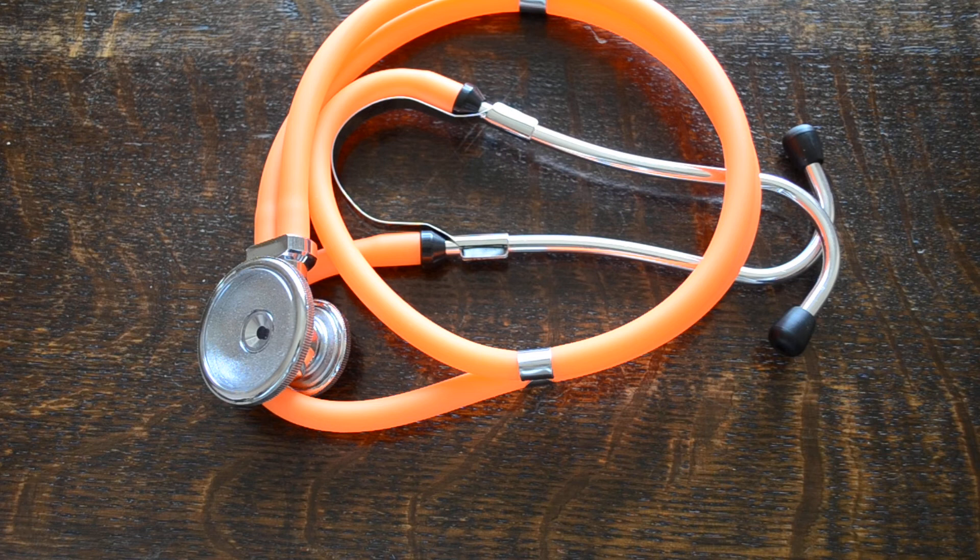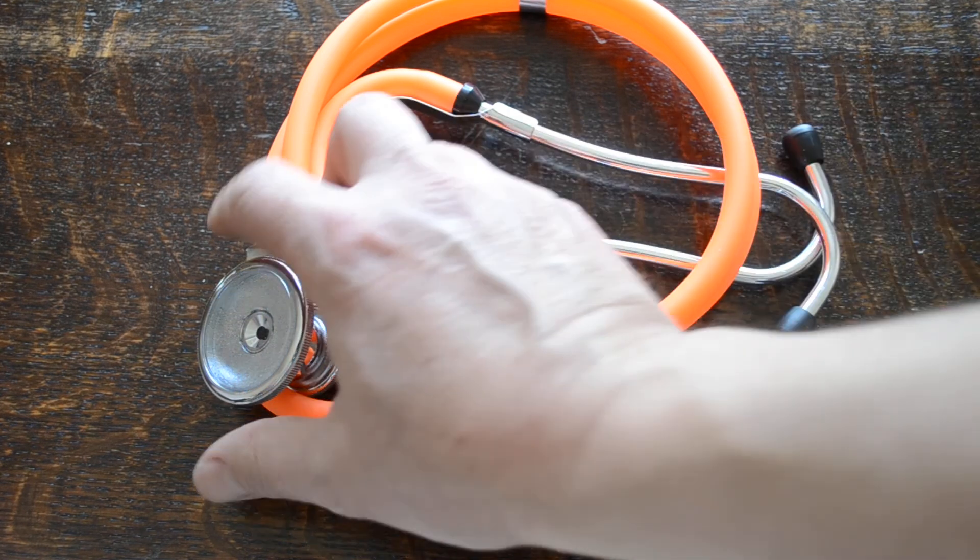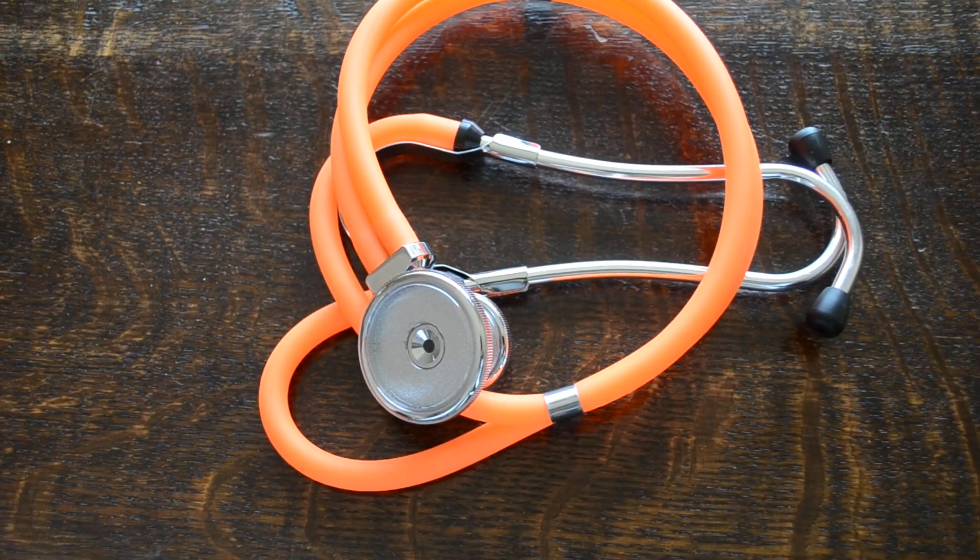So that's the Sprague Rappaport with orange tubes available from Valumed. The price of these units currently they're on offer at just under £10. With delivery you're looking at £12 to £13 delivered in the UK and that's going to give you really good quality stethoscope for under £15 delivered.